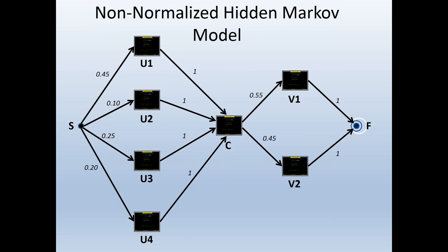Here we see a non-normalized hidden Markov model with one many-to-many transition in the center. Event C has four inputs, namely U1, U2, U3 and U4, and has two potential outputs, V1 and V2. If we look at the probabilities to go from S to U1, S to U2, S to U3, and S to U4, you can immediately recognize the same probabilities which were present in the top layer of the concept lattice in the previous slide.